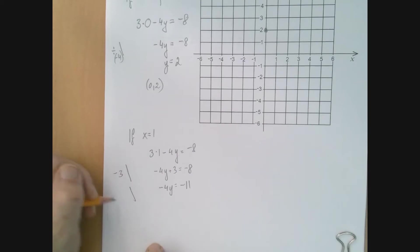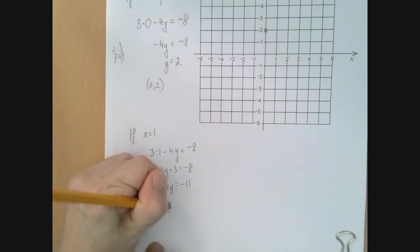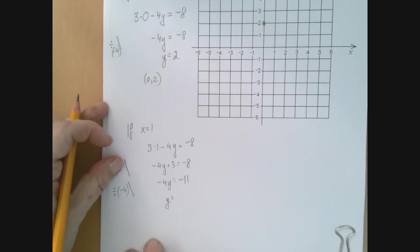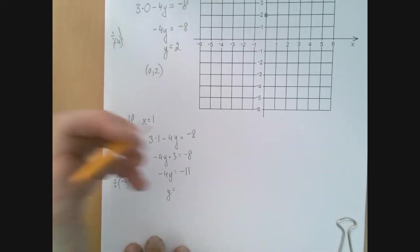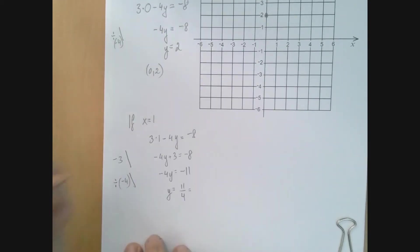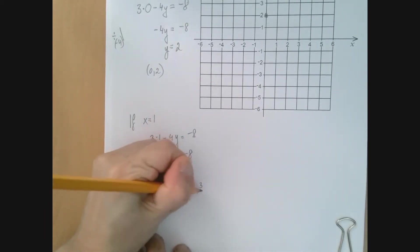minus 4y equals negative 11. And now we're going to divide by negative 4. So y equals negative 11 over negative 4, which is the same as 11 over 4. And that's almost 3. That's 2 and 3 over 4.